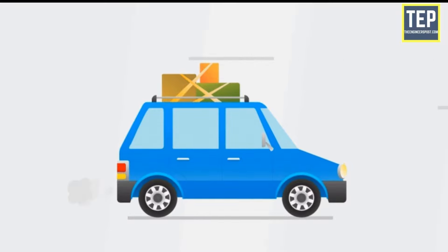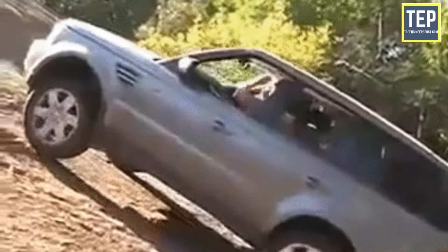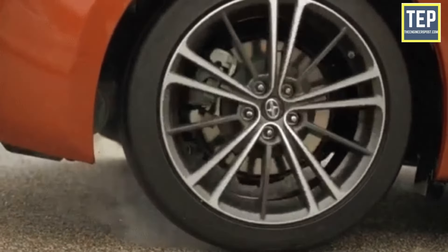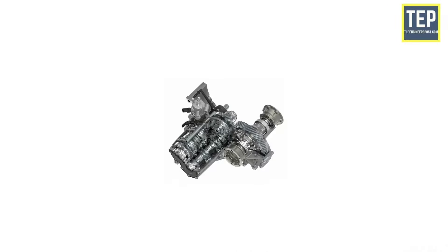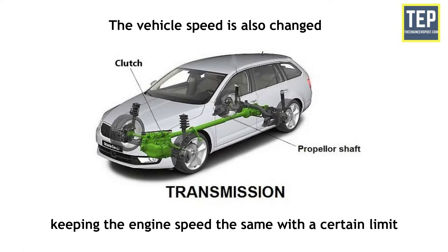When a vehicle is starting from rest, high torque is required at the driving wheels for climbing a hill. Hence, a device must be provided to permit the engine crankshaft to revolve at relatively high speed while the wheels turn at lower speeds. This is enclosed in a metal box called a gearbox. The vehicle speed is also changed with the help of the transmission, keeping the engine speed the same within a certain limit.